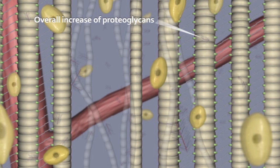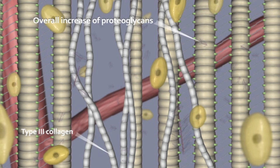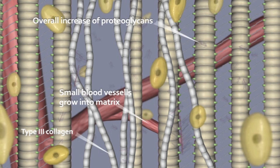Stage 2: Tendon disrepair. The tendon in the disrepair stage will remain hypercellular while structural changes begin. These mainly include type 3 collagen production and the growth of neo-vessels into the cellular matrix.